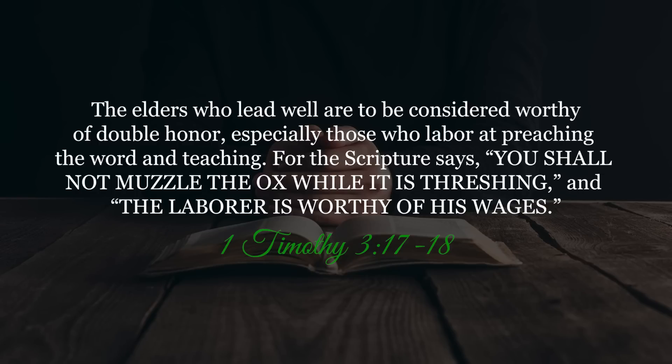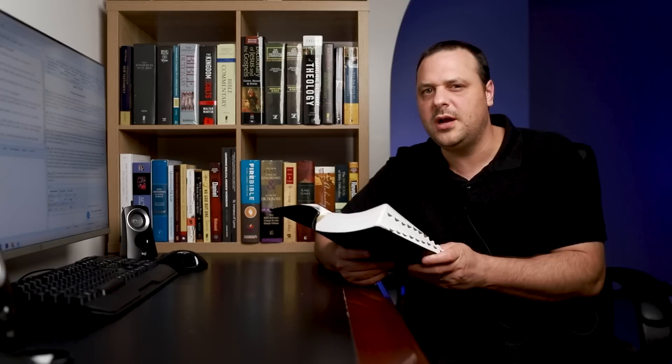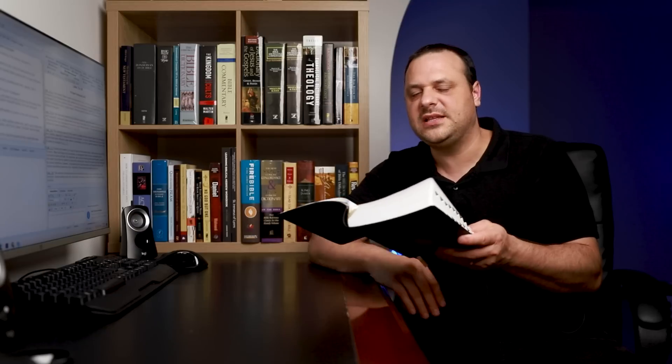The elders who lead well are to be considered worthy of double honour, especially those who labour at preaching the Word and teaching. Now when it says double honour here, it's not saying that they should get twice as much as everybody else, but what it's saying is that they should get the respect that they deserve as elders of the church, as well as the financial support. And verse 18 gives us a bit of an idea what kind of support they should get for their job. Paul is quoting two passages of scripture, one from the Old Testament and one from the New Testament. Now the Old Testament passage is quite straightforward. The ancient Israelites were not permitted to muzzle their ox while they treaded out the grain. They were to allow the oxen to eat the grain as they worked. And in the same way, the Apostle Paul is saying that pastors should be allowed to eat as they tread out the grain, as they work in the church. They are to have their needs provided for.